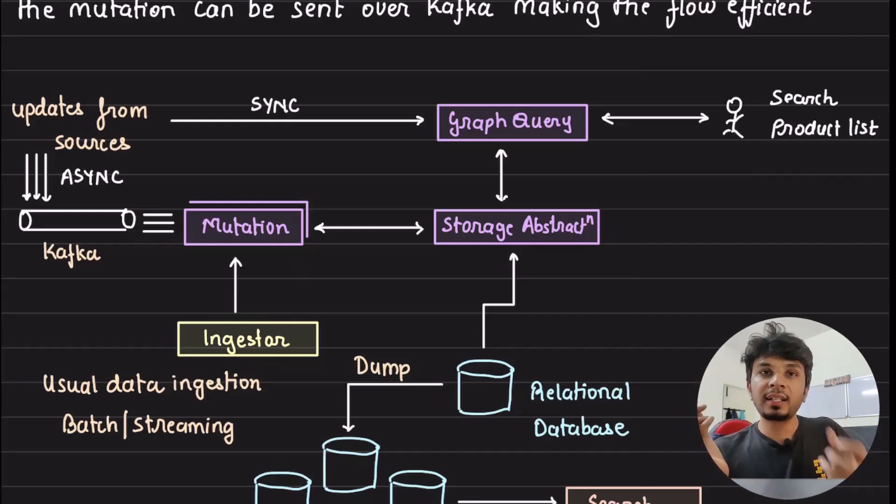This is what your regular flow would look like. And then for bulk mutation that comes in, some external mutation, something that you would want to do, accepts those events through Kafka and those updates from other sources can happen both ways, asynchronously through Kafka or synchronously through graph API. Both ways are fine.